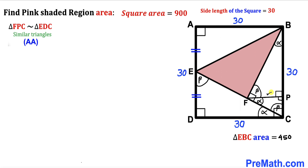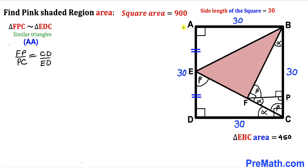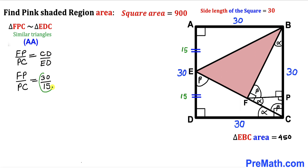Therefore, tiny right triangle FPC is similar to triangle ADC according to the Angle-Angle similarity theorem. So we have the proportion: FP divided by PC equals CD divided by ED. We can see CD equals 30, and since E is the midpoint of AD, AE equals ED equals half of 30, which is 15 units. So ED is 15 units.